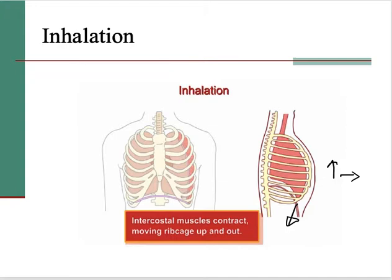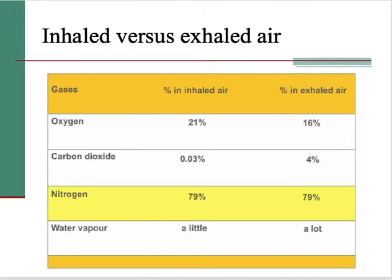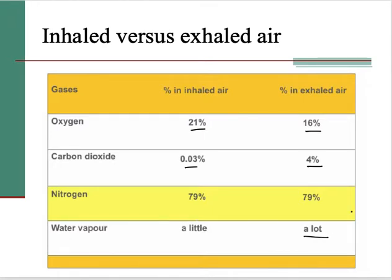Next, let's look at the difference between inhaled and exhaled air. This isn't hugely important for Leaving Cert — you're unlikely to get questions on exact percentages. However, you do need to know that the oxygen percentage is higher in inhaled air, and that oxygen goes into the bloodstream, so exhaled air has a lower percentage of oxygen. Carbon dioxide in inhaled air is quite low compared to exhaled air, which is up at four percent. Nitrogen is unchanged because we don't do anything with it, and while there isn't much water vapour in inhaled air, that air is moistened as it goes into the lungs to help with diffusion, so exhaled air is quite moist.